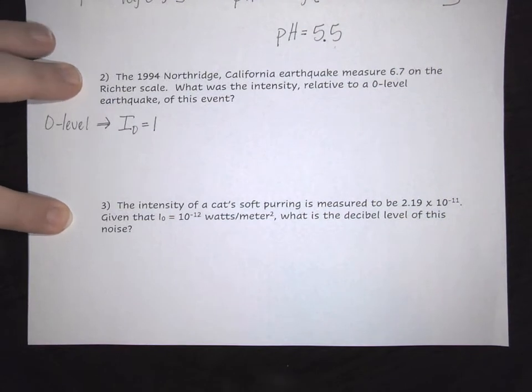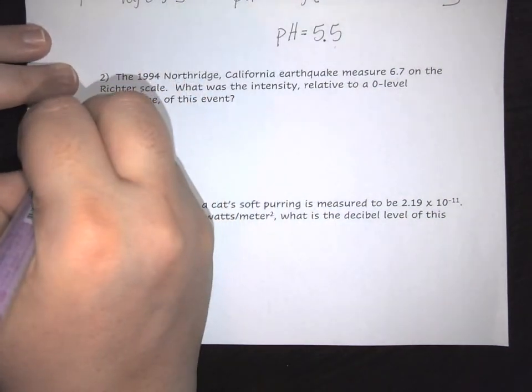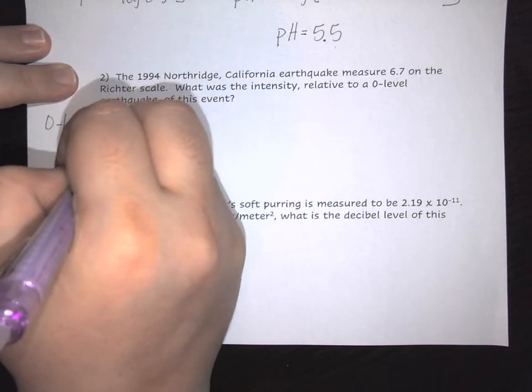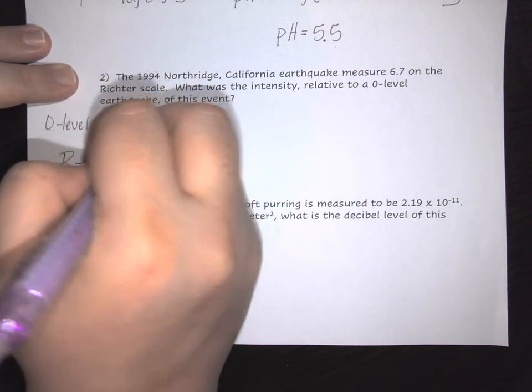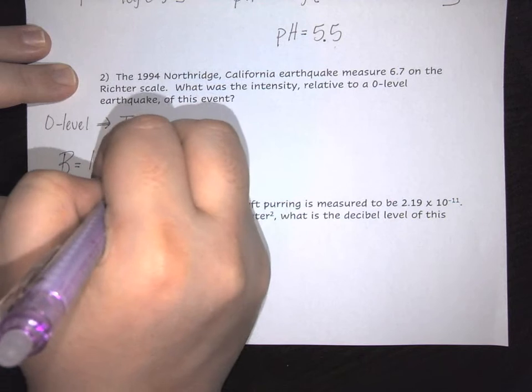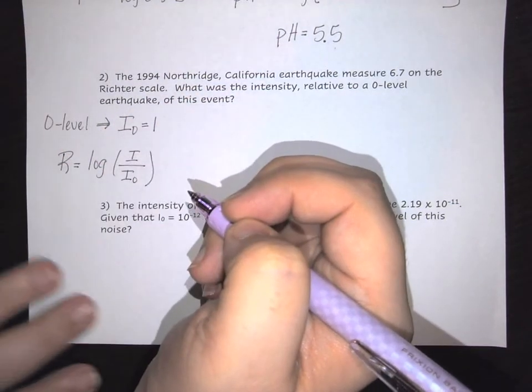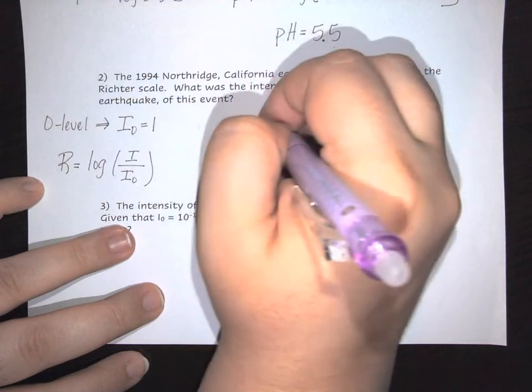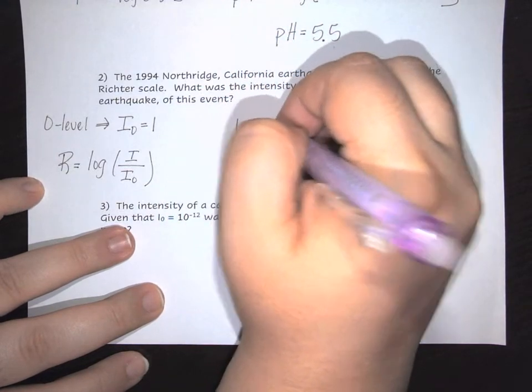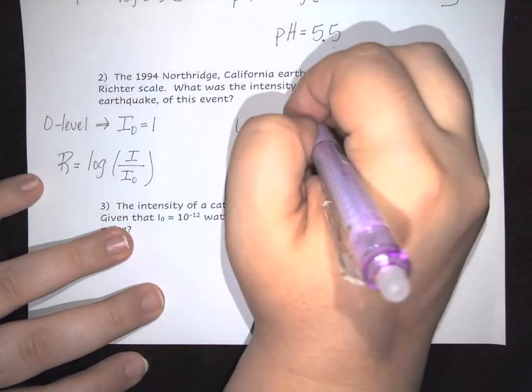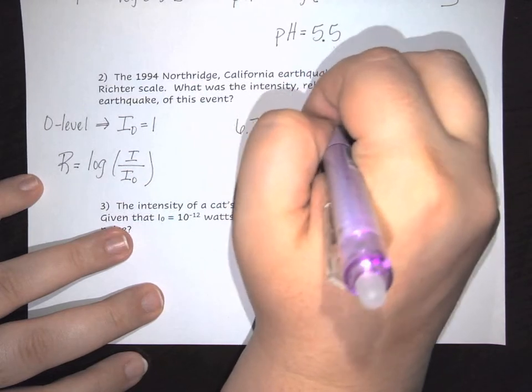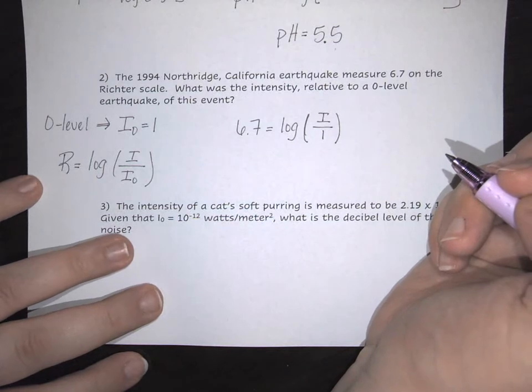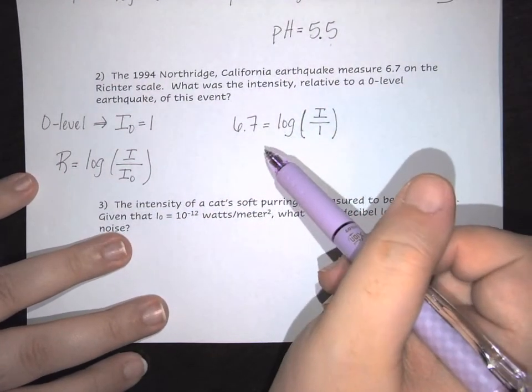Here we're going to use the equation that R, or Richter scale, equals the log of the intensity over the initial. In this case, our Richter scale was 6.7. So we have 6.7 equals the log of our intensity over 1, because that's our zero-level earthquake. Now we have to solve for this.